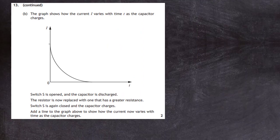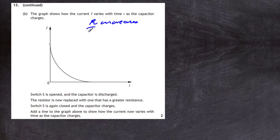Question 13, part B. The graph shows how current I varies with time t as the capacitor charges. The switch S is opened, the capacitor is discharged, the resistor is replaced with one of greater resistance, switch S is closed again, and the capacitor charges. We must add a line to the graph showing how current now varies with time. First, when resistance increases, the maximum current in the circuit decreases — so the curve starts lower.